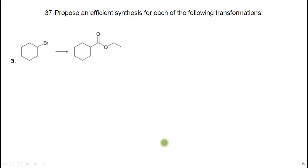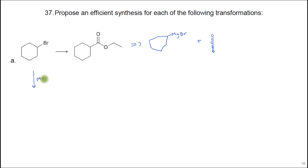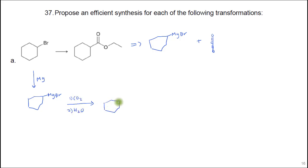Here we're synthesizing an ester, and we can use a similar Grignard strategy. We can't add the ester directly, but we can make that once we form the acid. Turn this into a Grignard, add carbon dioxide and water — that will add one carbon. Then do the Fischer esterification.